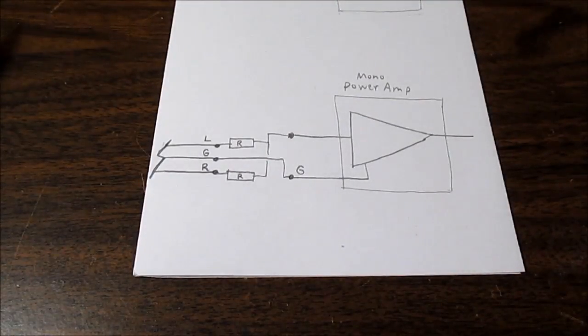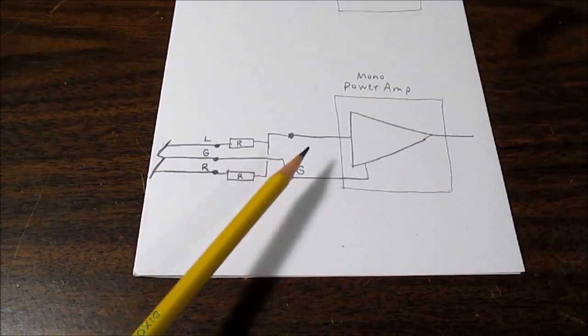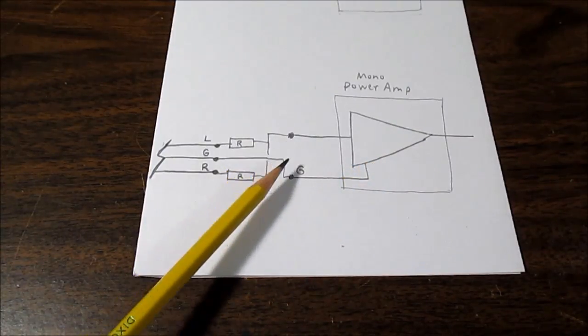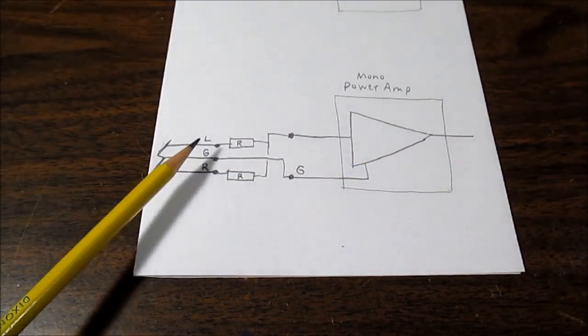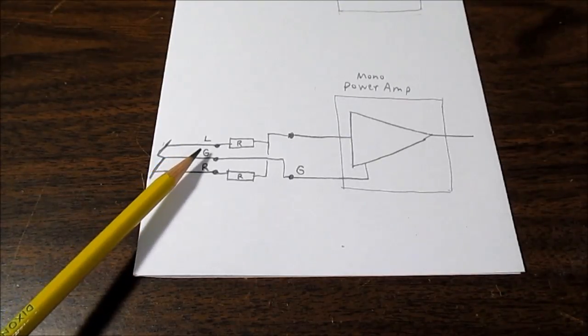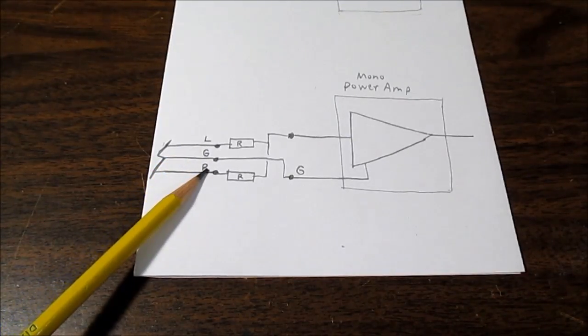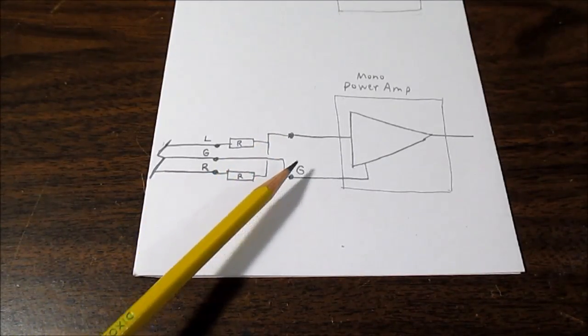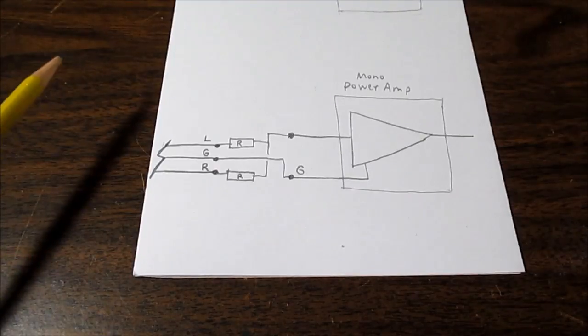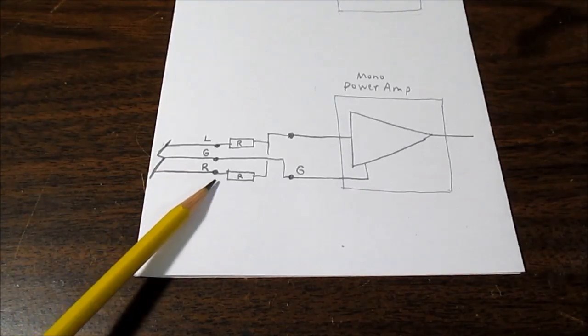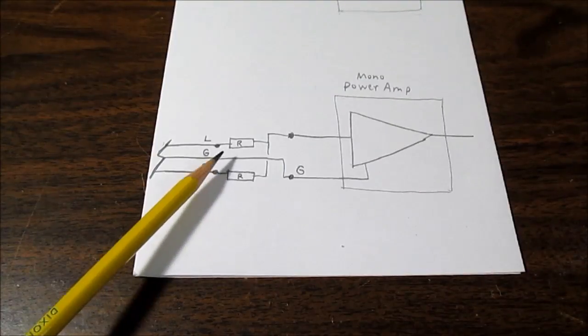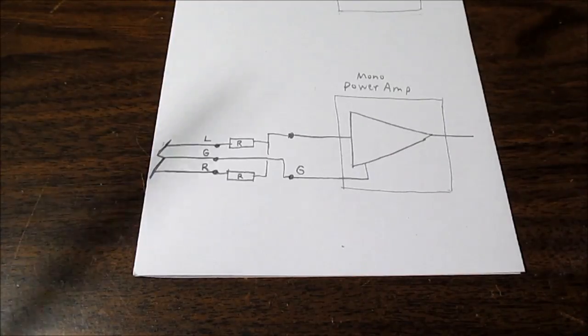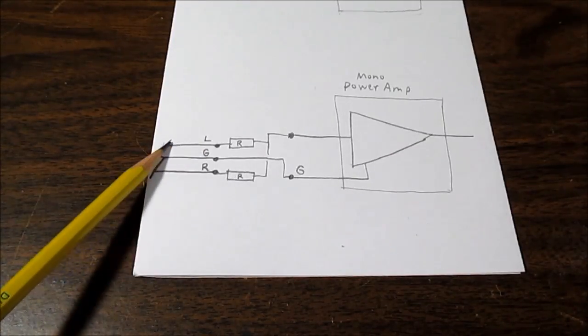Our next situation is taking a stereo signal and combining it into the input of a mono amplifier, or mixing it if you will. So we have our signal, our left ground or common and right line. And we need to mix those together and send it into the input of this amplifier. Now normally you think, well I can just connect the left and right lines together.